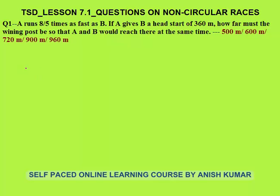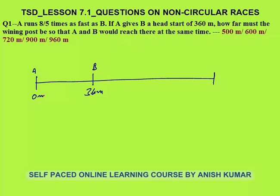The first question: A runs 8/5 times as fast as B. If A gives B a head start of 360 meters, B will be at 360 meters and A will be at 0 meters. How far must the winning post be? Let's assume that the winning post is X meters away from B. This distance of 360 meters we know, so we need to calculate the value of X.